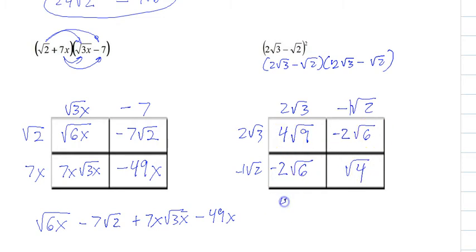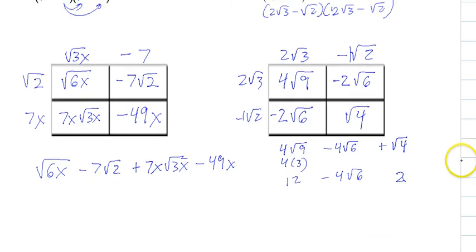So the first one, that's 4 times 3, which is 12. All right. The middle two are like terms now. So if you have two radical 6s and then another two radical 6s, that's minus 4 radical 6s. And then the last term is 2. Let's bring it all down. Those are like terms. And that's everything.